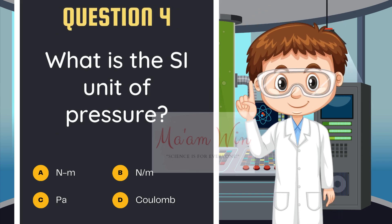Question number 4. What is the SI unit of pressure? Letter A, newton meter. Letter B, newton per meter. Letter C, pascal. Letter D, coulomb.